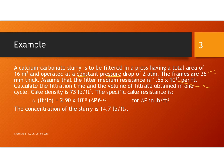Calculate the filtration time and the volume of filtrate obtained in one cycle. The cake density is 73 pounds per cubic foot. The specific cake resistance is given here as alpha, as a function of delta P, or the pressure drop. And for this, delta P needs to be in pounds per square foot. The concentration of the slurry is 14.7 pounds per cubic foot.